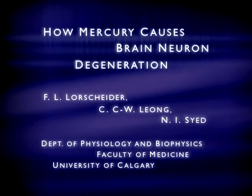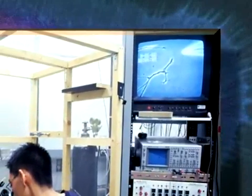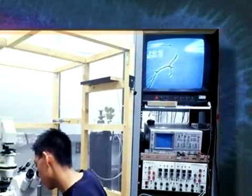How Mercury Causes Brain Neuron Degeneration. Mercury has long been known to be a potent neurotoxic substance, whether it is inhaled or consumed in the diet as a food contaminant.